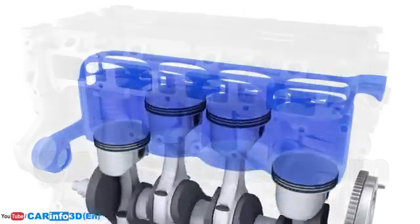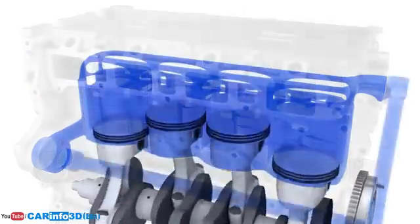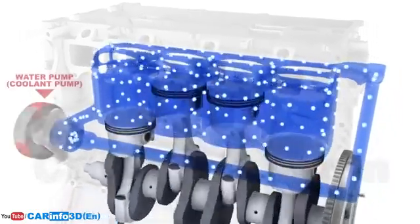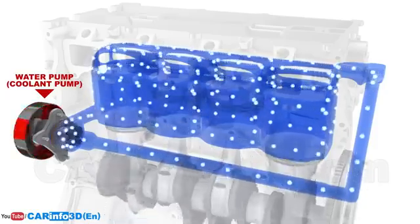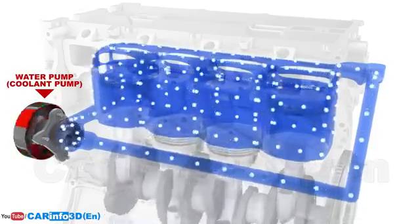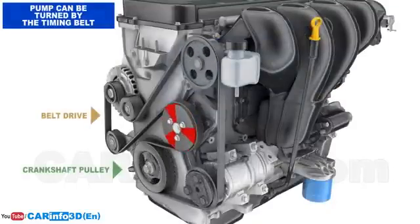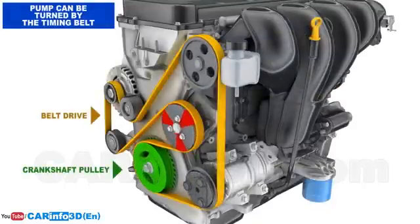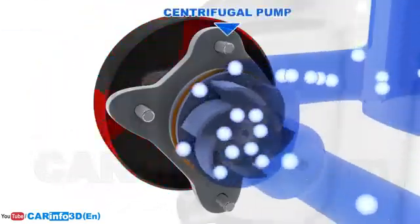The coolant doesn't stay in the same place. Instead, a water pump keeps it circulating in a closed loop. In turn, the pump is normally rotated by a belt drive that is powered by the crankshaft. This type of pump is known as a centrifugal pump.